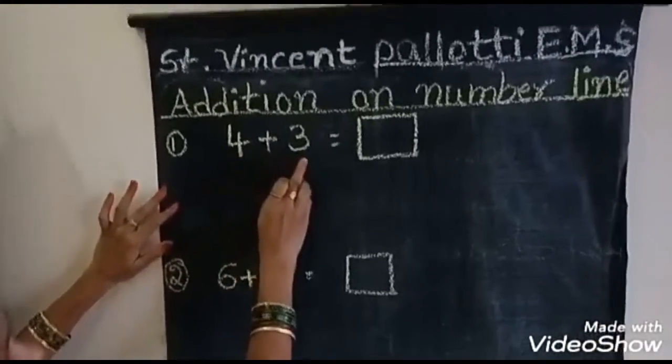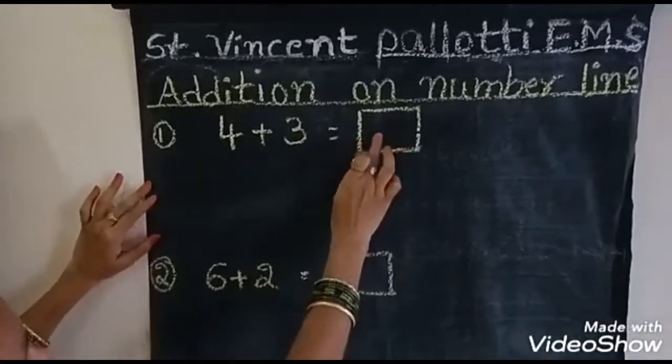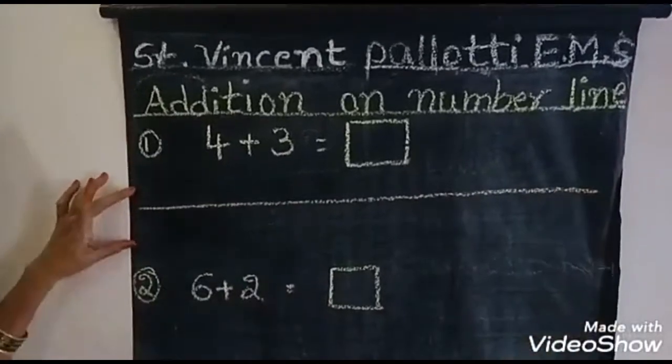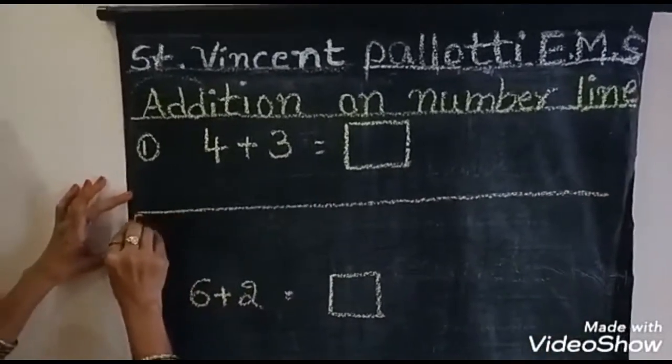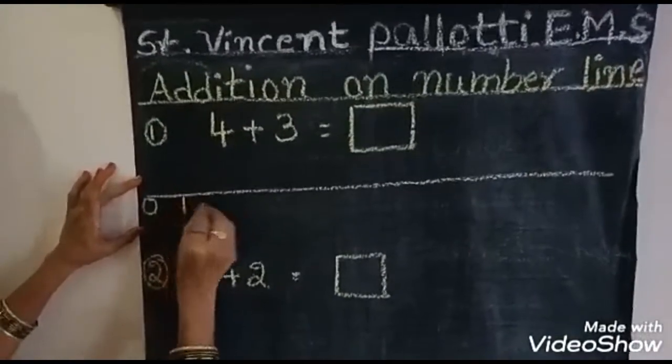4 plus 3 is equal to how much answer? Ikada boks itchari. You draw one scale. Like this. Draw one line. Okay. 0, start 0 onwards. 0, 1, 2,